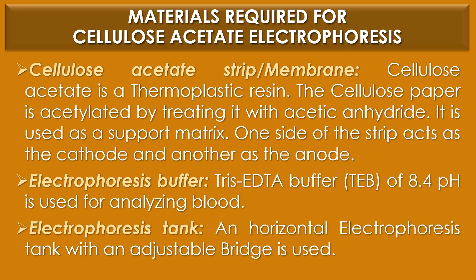Materials required for cellulose acetate electrophoresis. First, the cellulose acetate strip or membrane. Cellulose acetate is a thermoplastic resin. The cellulose paper is acetylated by treating it with acetic anhydride. It is used as a support matrix. One side of the strip acts as the cathode and the other side acts as the anode.